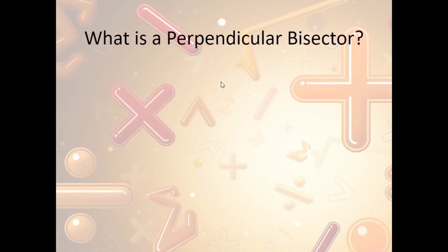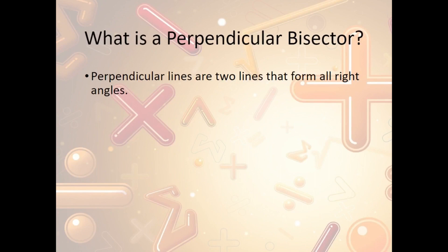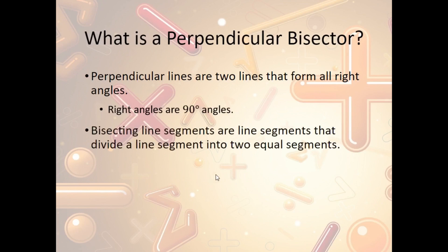What is a perpendicular bisector? Perpendicular lines are two lines that form all right angles — 90 degree angles. Bisecting a line segment means cutting the original line segment in half into two equal segments. For example, we have our original line segment; going halfway through gives us the midpoint, and when we draw our bisecting line it forms all right angles — so we have four 90-degree angles. That's a perpendicular bisector.